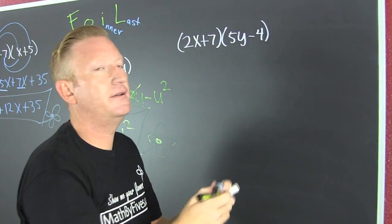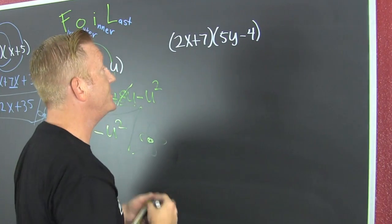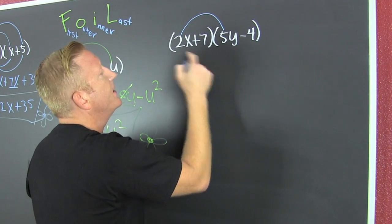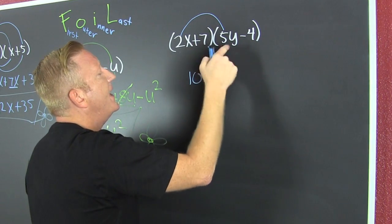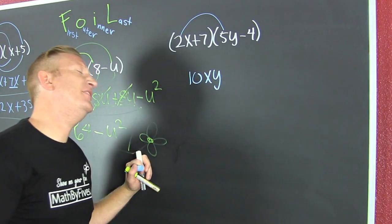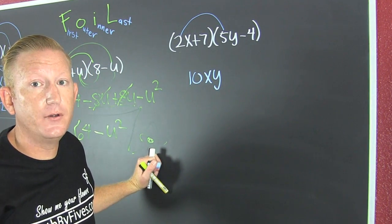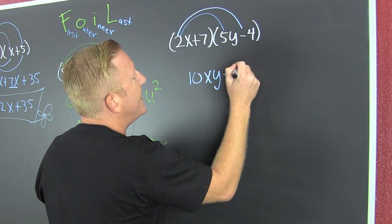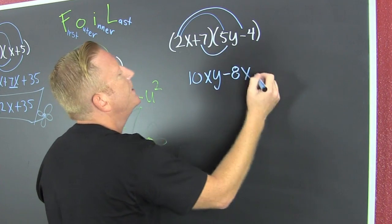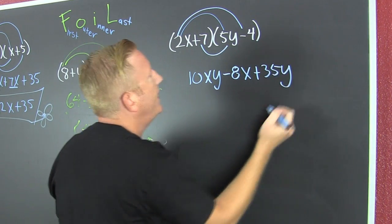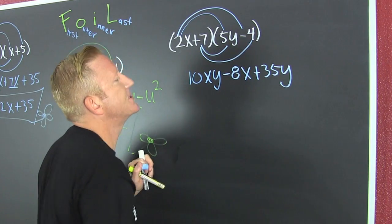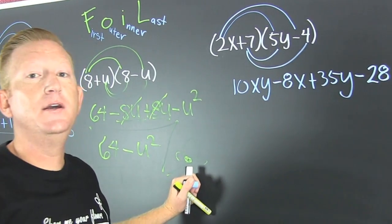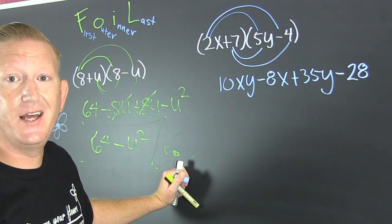We're still going to first, outer, inner, last — FOIL! So then first — that's 10, because 2 times 5 is 10, xy. Do you have to go in the FOIL order? You don't have to go in the FOIL order — it's just a fancy acronym to help you remember. And then the outer — that's minus 8x. And then your inner — that's plus 35y. And then finally you last — minus 28. And then you gather, collect, and combine, but you find that there aren't any like terms.